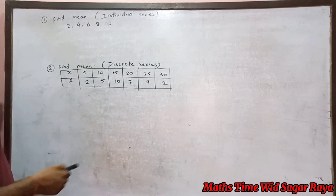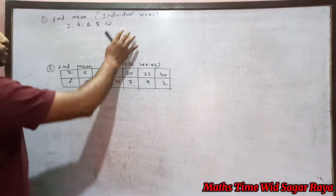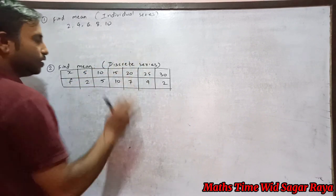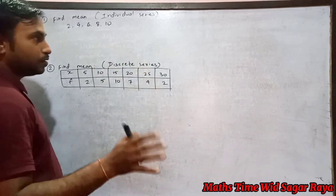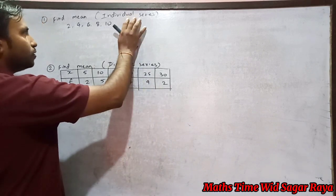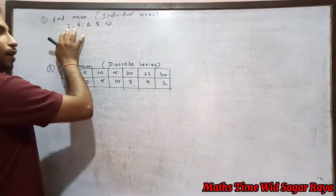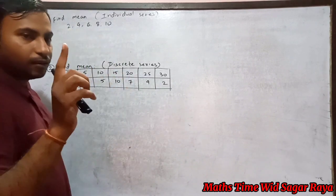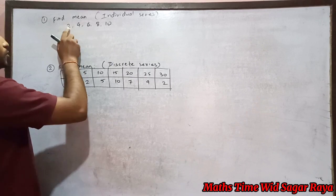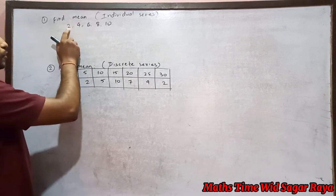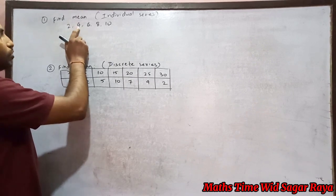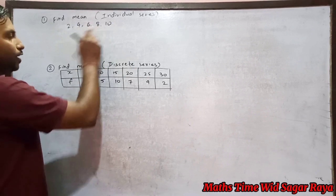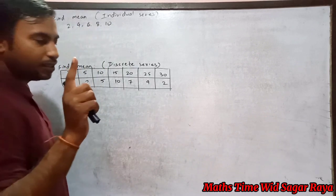Today I'm going to teach you mean in individual series and discrete series. First, try to understand what is individual series. Individual series means every data has got only one frequency. Your frequency of 2 is 1, frequency of 4, 6, 8, 10 - each of them has frequency 1.